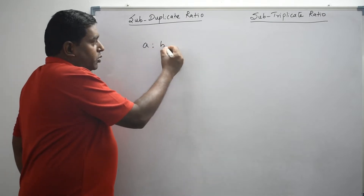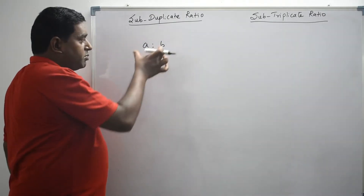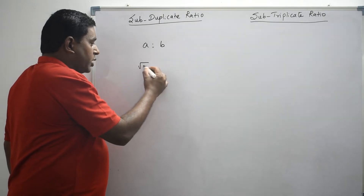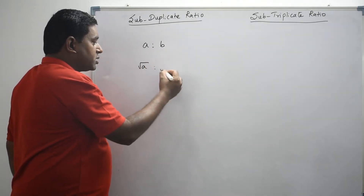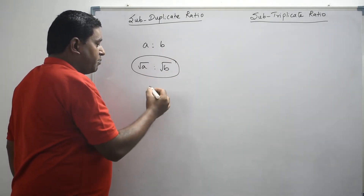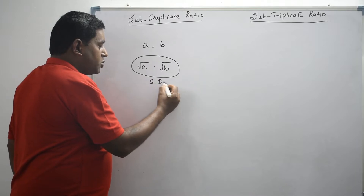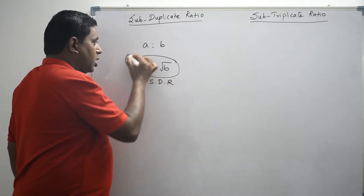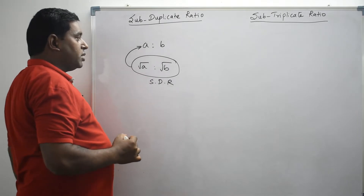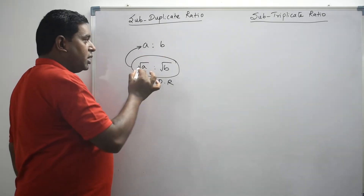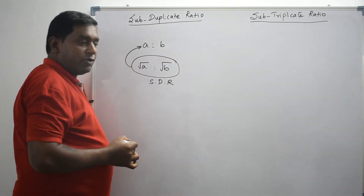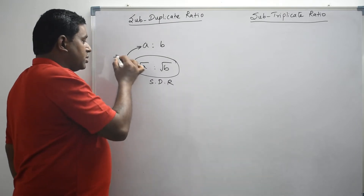Let's consider the ratio a is to b. I want to get subduplicate ratio of a is to b. What I have to do is I have to take square root for both the first term and second term. So square root of a is to square root of b is called subduplicate ratio of a is to b. One more important thing — this ratio a is to b and its subduplicate ratio, square root of a is to square root of b, they are not equal.